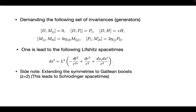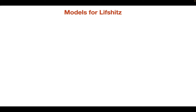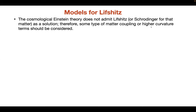Let's come to models for Lifshitz — what kind of spacetimes admit Lifshitz as a solution. As is well known, the cosmological Einstein theory, like the AdS one, does not admit Lifshitz. So you need something else — you need matter coupling or some higher curvature terms. In this talk, I will focus on the matter coupling, since the higher curvature terms are quite hard to handle because, as far as I know, there is no way to give a well-defined variation and find the action with the traditional boundary conditions.